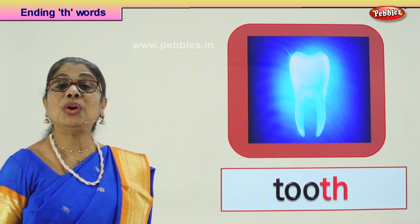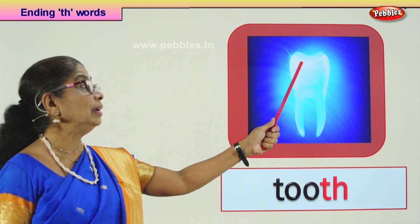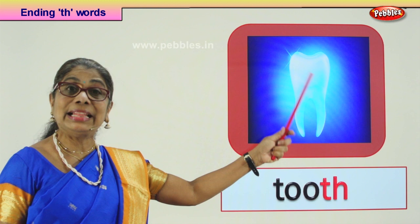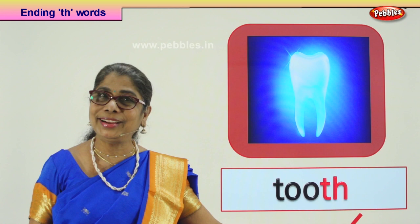You have to take care of all your teeth. Each tooth in your mouth has to be taken care of. There should be no dirt, there should be no cavities, and it shouldn't get chipped off when you fall down. Taking care of your teeth is important. What is this? This is tooth — one tooth.